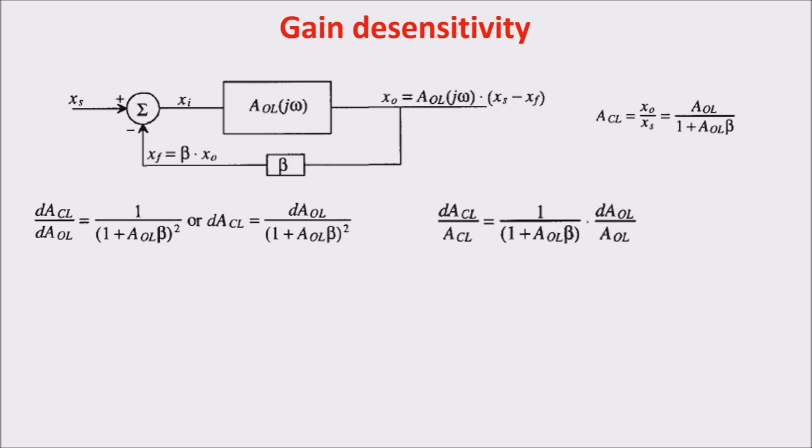Now let's say the open loop gain is 10,000 and beta is 1 over 10. Then, a change of 10 percent in the open loop gain becomes 0.01 percent in the closed loop gain. So, changes or variation in the open loop gain don't affect the closed loop gain.